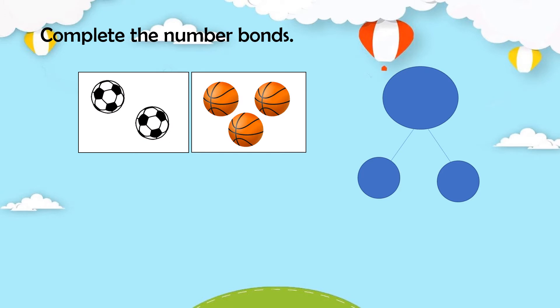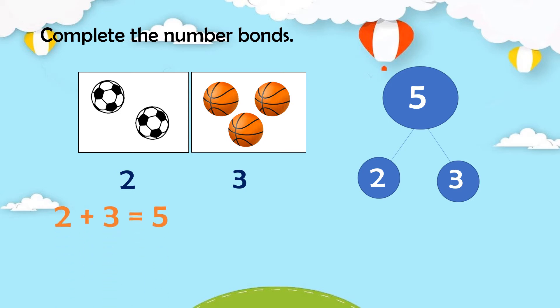Another example — complete the number bonds. We have two soccer balls and three basketballs. These are the parts of the number bond, so we write two and three at the bottom because they represent the parts. How many balls are there altogether? We have five balls altogether. We write five at the top because it represents the whole. So we can say that two and three makes five, or two plus three equals five.